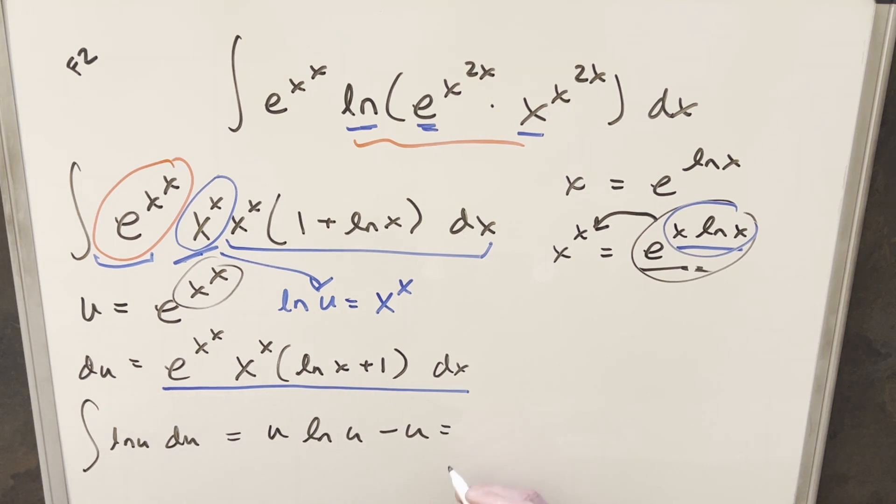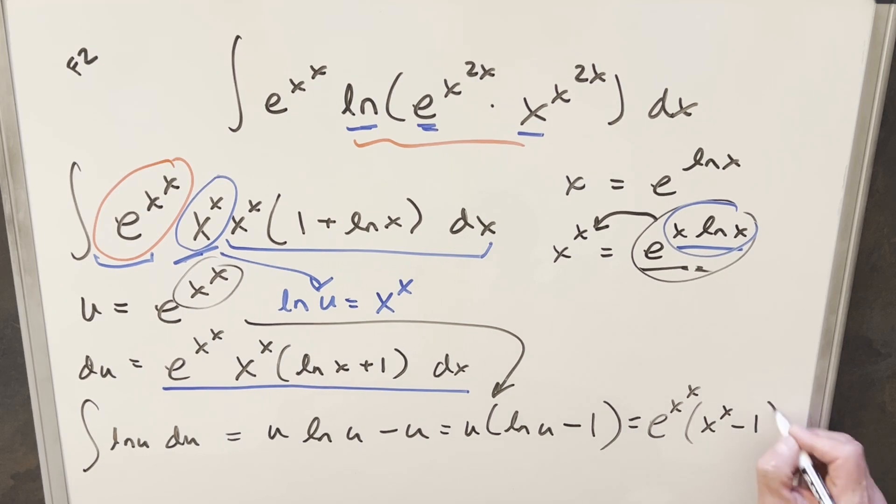And before I back substitute, I'm actually just going to factor out a u. So I'll write it as u, ln u, minus 1. And then we can back substitute. So for my final solution to this, we just get e to the x to the x. Natural log of u is going to be x to the x times x to the x, minus 1, add a plus c, and that's it.